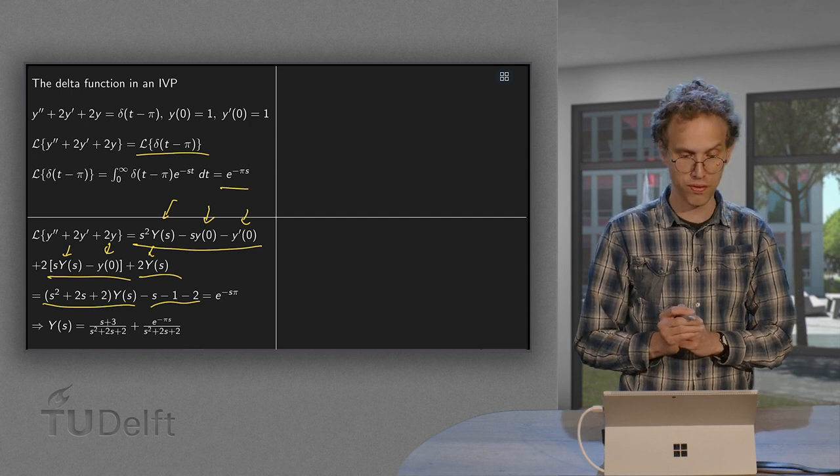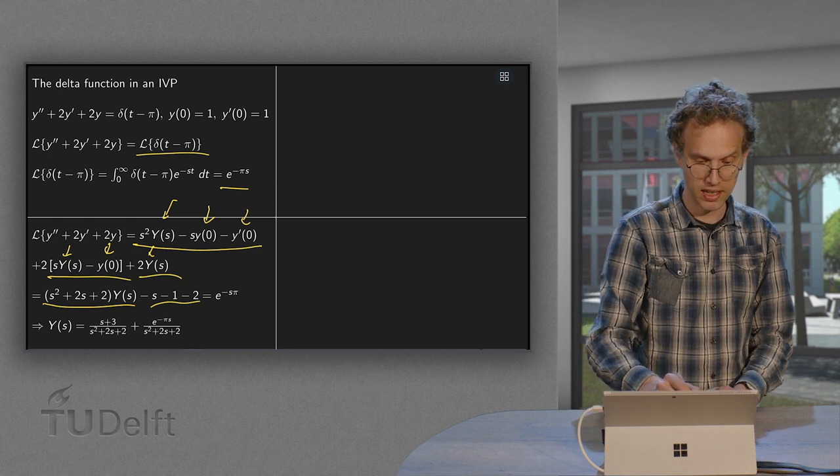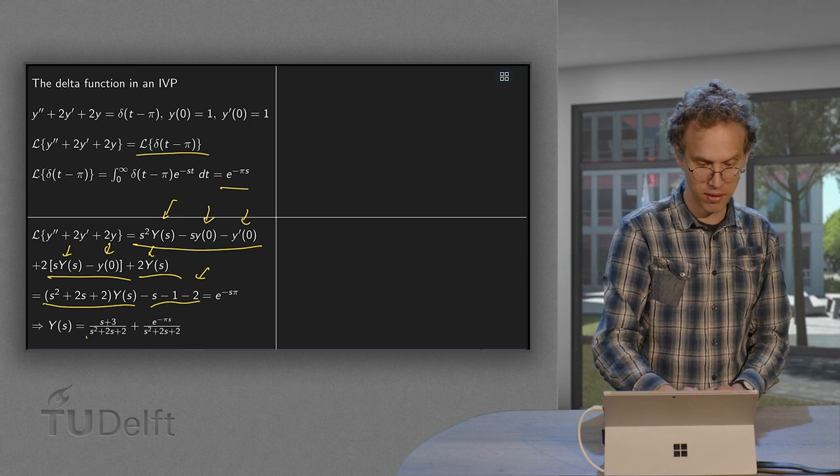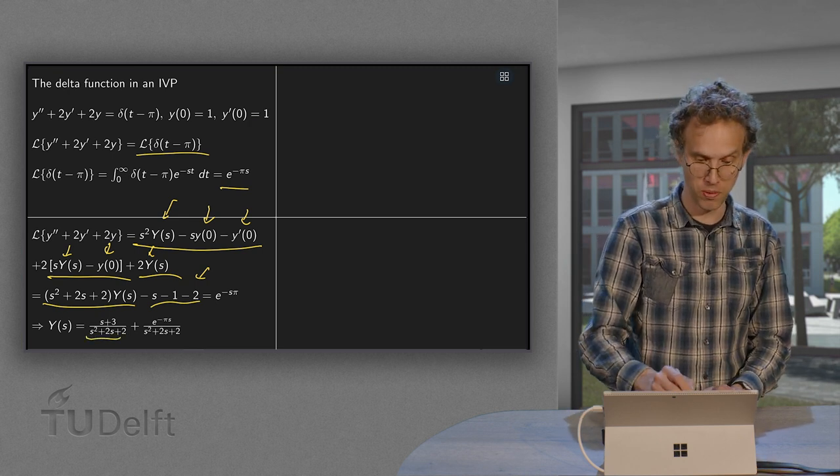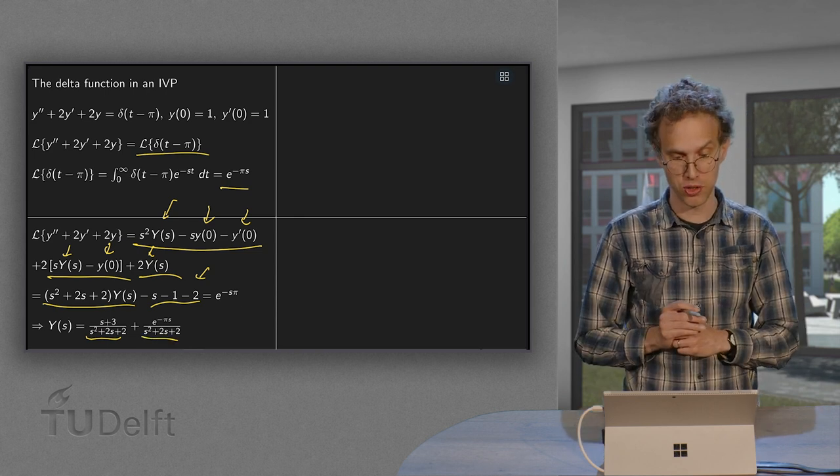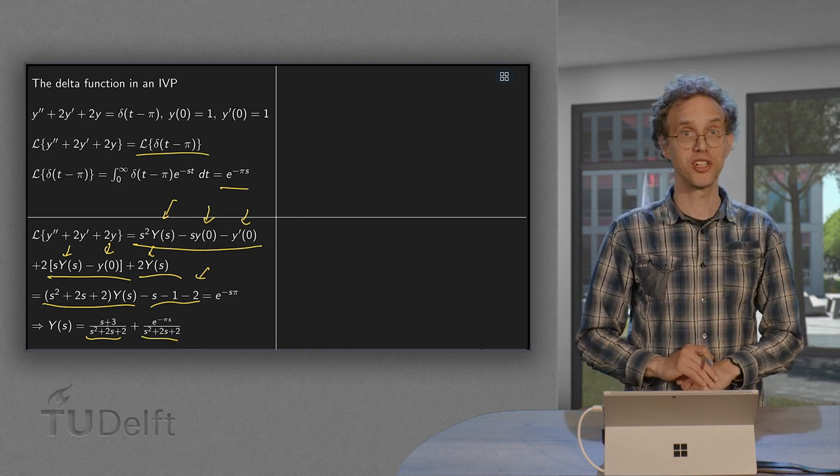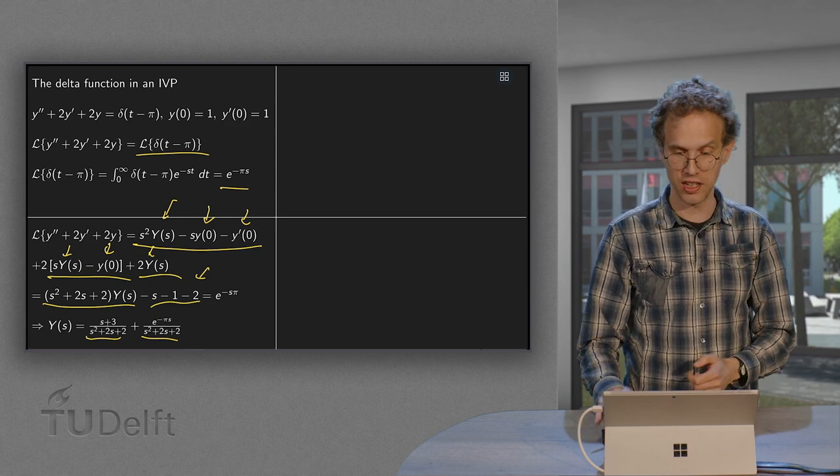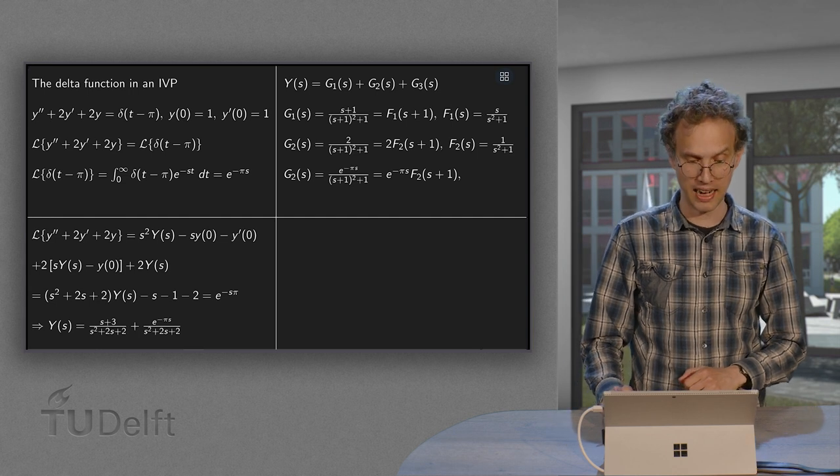Then, if we now solve for Y of s, we get, here, if we bring it to the other side, we get an s plus 3 divided by s squared plus 2s plus 2. And we have an e to the power minus pi s divided by s squared plus 2s plus 2. So far, so good. There we have our Y of s. But we want to have y of t, so we need to transform back.